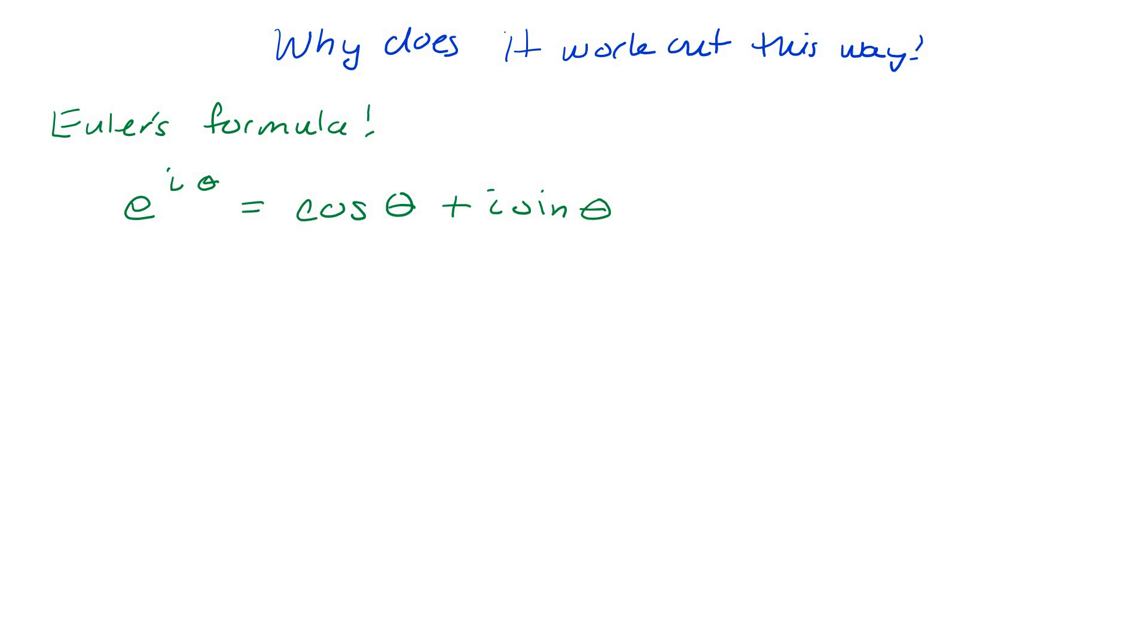And that's e to the i theta is cosine theta, i sine theta. The x portion is cosine theta. The y portion is sine theta. So you're just on different circles. If I put a radius in front of it, I just multiply it by r. So this connection makes math on the complex plane really easy.